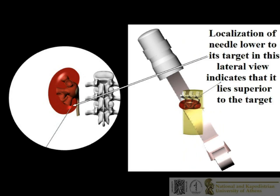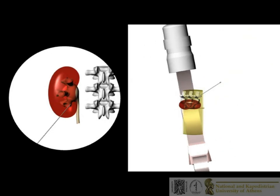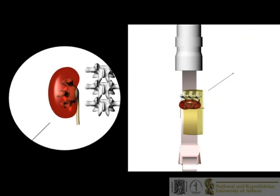Based on the contrast movement between the needle tip and target, the surgeon can understand whether the target is located in a more superficial or deep position. In this case, the CRM moves towards the head of the patient, and localization of the needle lower than the target in the CRM view indicates that it actually lies in a superior aspect and more deep penetration is required. The CRM is then rotated back to zero degrees and the procedure is repeated.